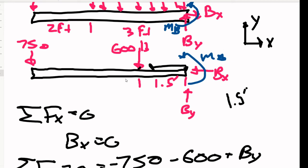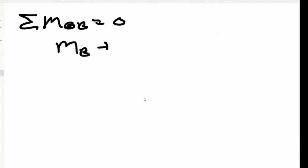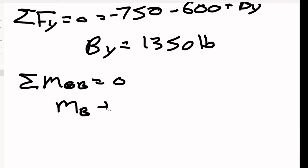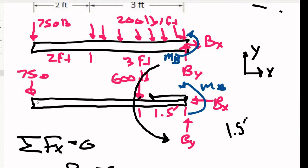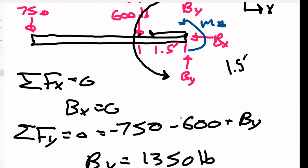So it's a negative 1.5 feet. So the negative and the negative cancel out, which means that this is a positive counterclockwise rotation about B, which is what we do. So we've got Mb plus 600 times 1.5 feet, 600 pounds times 1.5 feet. And then similarly, we've got the 750 and 5 feet.